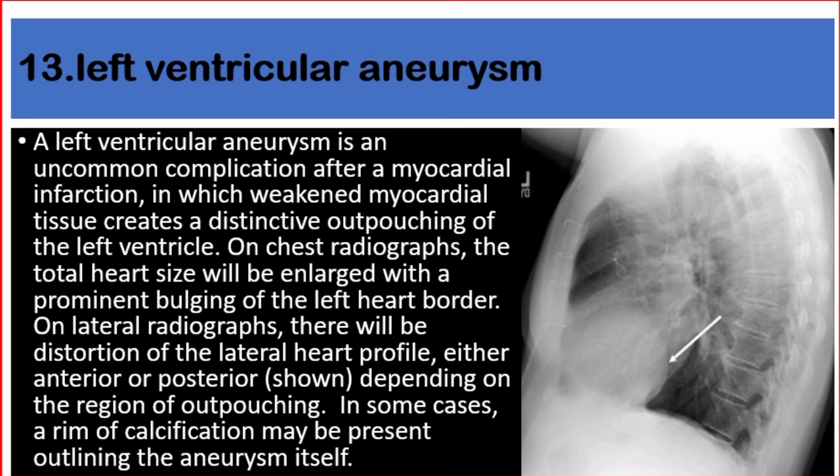Number thirteen: left ventricular aneurysm. Left ventricular aneurysm is an uncommon complication after a myocardial infarction, in which weakened myocardial tissue creates a distinctive outpouching of the left ventricle. On chest radiographs, the total heart size will be enlarged with prominent bulging of the left heart border. On lateral radiographs, there will be distortion of the lateral heart profile — either anterior or posterior — depending on the region of outpouching. In some cases, a rim of calcification may be present outlining the aneurysm itself.